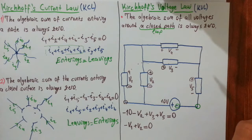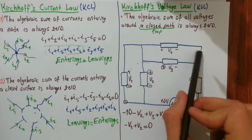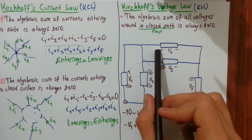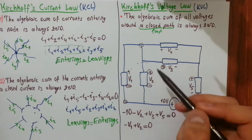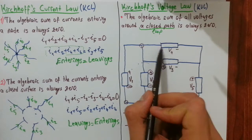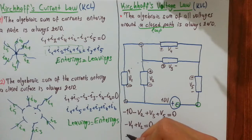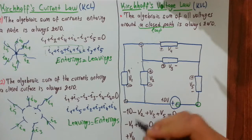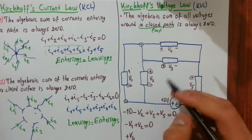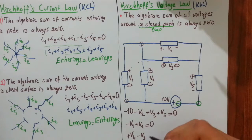Let's apply another KVL around this loop. Starting from this point, the first component we enter is the fourth component — we enter it from its positive terminal, so we write plus V4. The second and last component we enter from its minus terminal, so we write minus V3, and we equate this whole expression to zero by KVL.